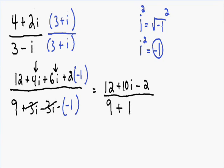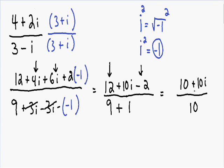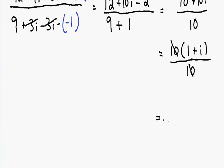Notice how we have no more i terms in our denominator, which is exactly what we wanted. That's why we multiplied by the conjugate. Now we just need to simplify a little bit further. In the numerator, we still have two like terms: 12 and negative 2. 12 minus 2 equals 10, and we still have our positive 10i term. In the denominator, we have 9 plus 1, which is also equal to 10. At this point, notice how in our numerator both terms have a 10 in common, so I'm going to factor out a 10, leaving us with 1 plus i on the inside. In the denominator we still have our 10, and now the 10 in the numerator and denominator cancel each other out. We're left with 1 plus i as our solution.